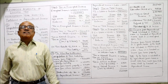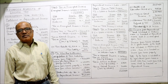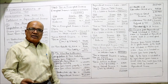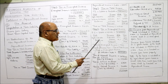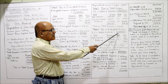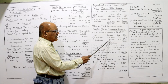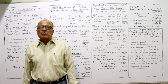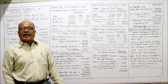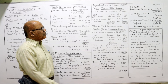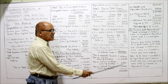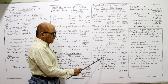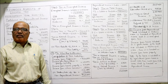Step 2: Tax on exempted income. Exempted income equals agricultural income plus basic exemption limit: 38,000 plus 2,50,000 equals 2,88,000. Tax: up to 2,50,000 — nil. Balance: 2,88,000 minus 2,50,000 equals 38,000 at 5% equals 1,900. Step 3: Income tax equals tax on total income minus tax on exempted income: 1,09,100 minus 1,900 equals 1,07,200. That is the tax on normal income.